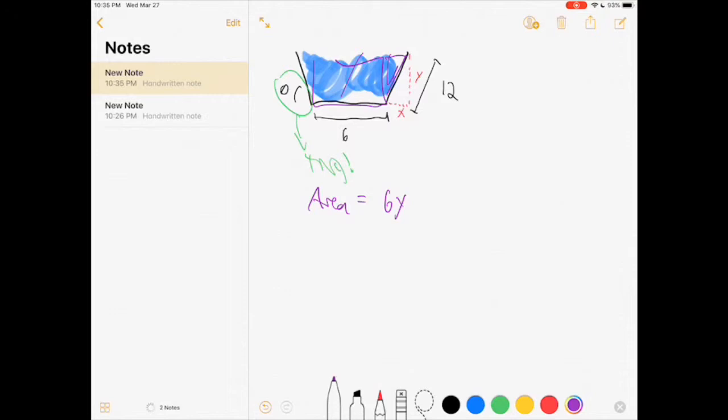This triangle will be y times x over 2, but there's two triangles, so it's just yx. That's our first equation.